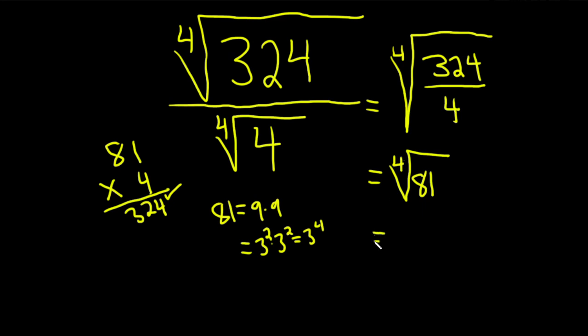So this becomes the fourth root of 3 to the fourth. And that's just going to be 3. The fourth root of 3 to the fourth, these cancel, you just get 3. So this whole thing is equal to 3.